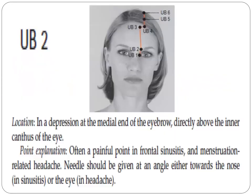First, we have UV2. Location: in a depression at the medial end of the eyebrow, directly above the inner canthus of the eye. Point explanation: often a painful point in frontal sinusitis and menstruation-related headache. Needles should be given at an angle, either towards the nose in sinusitis or towards the eye for headache.